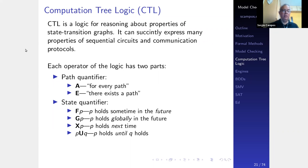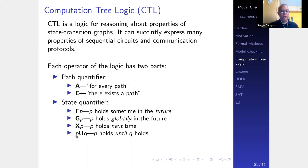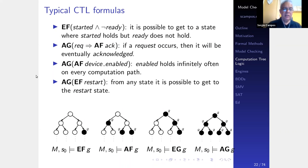To reason about those properties we use CTL — Computation Tree Logic. CTL is a logic for reasoning about properties of state transition graphs. CTL operators have two parts: a path quantifier (A for all paths, E for there exists a path) and a state quantifier (F: in the future; G: globally; X: next time; U: until). Combined operators include AF (for all paths, in the future it holds), AG (for all paths, globally), and so on.